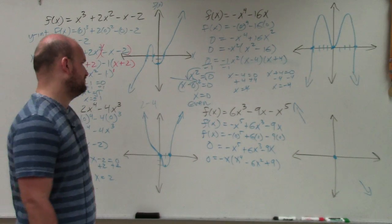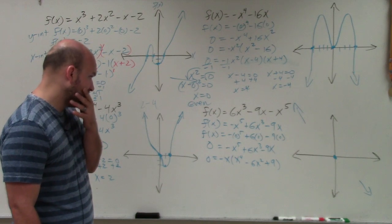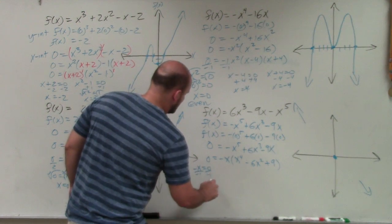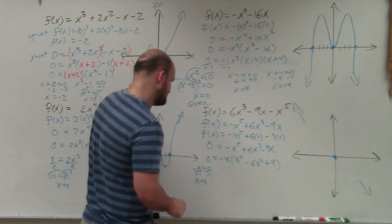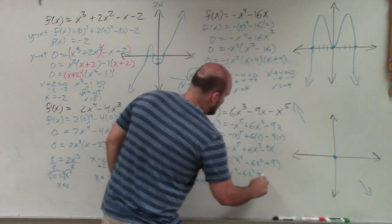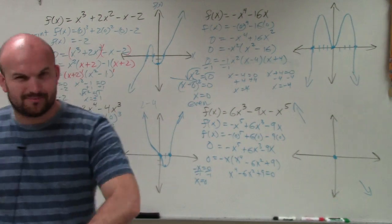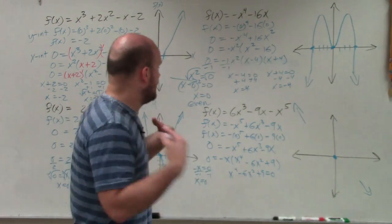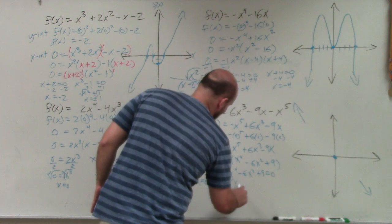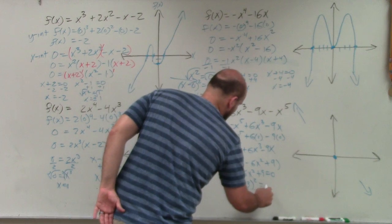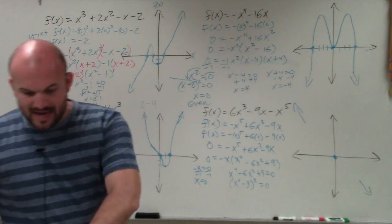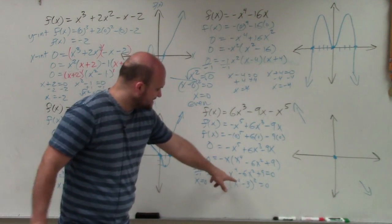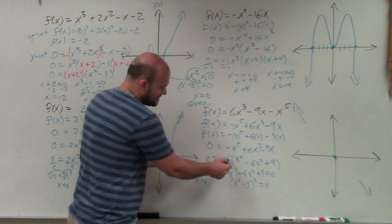Now to find the x-intercepts, we set this equal to 0 and rewrite: 0 = −x⁵ + 6x³ − 9x. I like to factor out the GCF first and make my first term positive, so I factor out a negative x, leaving 0 = −x(x⁴ − 6x² + 9). Setting −x = 0 gives x = 0, so that's one x-intercept. For the remaining factor, I notice it can be factored as a perfect square: (x² − 3)².